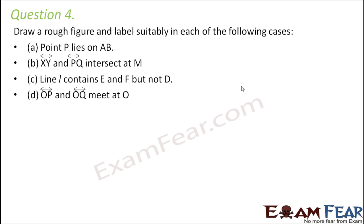Question number four, draw a rough figure and label suitably in each of the following cases. Point P lies on AB. So basically you draw a line AB. So let us call this as a line AB and point P lies over it. So point P lies somewhere between AB.